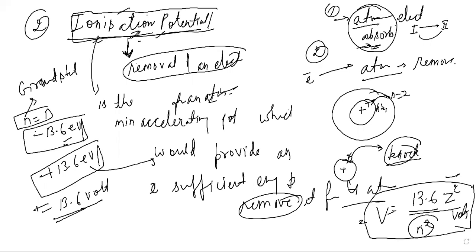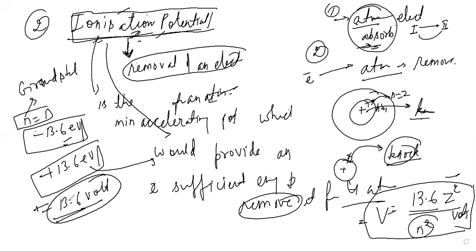Both topics are now clear. Remember: excitation potential is the minimum energy provided when an electron moves from an inner orbit to an outer orbit. Ionization potential is the minimum potential needed to remove or knock out an electron from the atom's surface. Both excitation potential and ionization potential always have positive values.